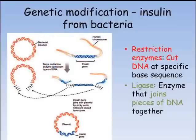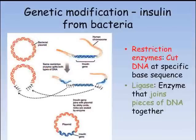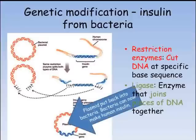The gene and plasmid both have the same sticky ends, allowing the gene to be attached to the plasmid. DNA ligase is another enzyme which joins the DNA together. We now have a recombinant plasmid which can be put back into the bacteria. The bacteria is now able to make insulin.